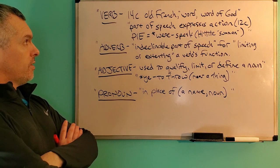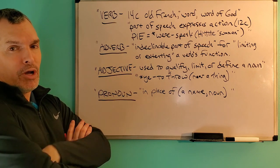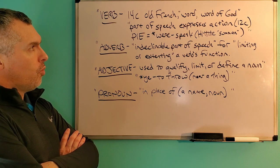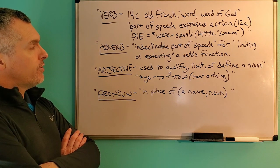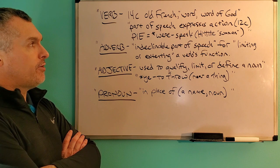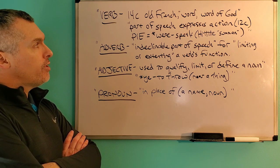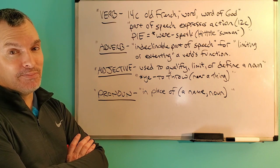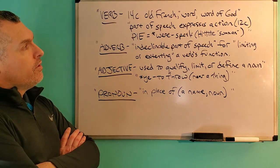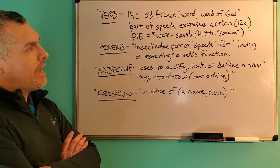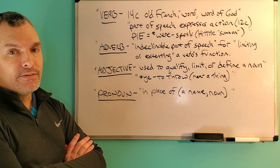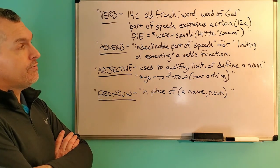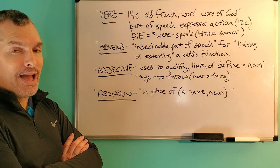To begin with, and all of this comes from Etymology Online. The verb comes from a 14th century old French word, word of God. Also, even further back from the 12th century, it's a part of speech that expresses action. From the Proto-Indo-European root W-E-R-E which means to speak, and in Hittite it means summon or call. So a verb expresses action, and in order to express action you must think. So a verb is thinking, action, movement.